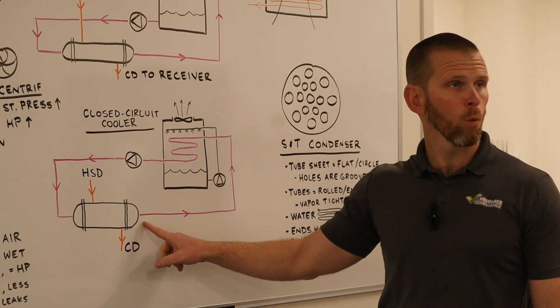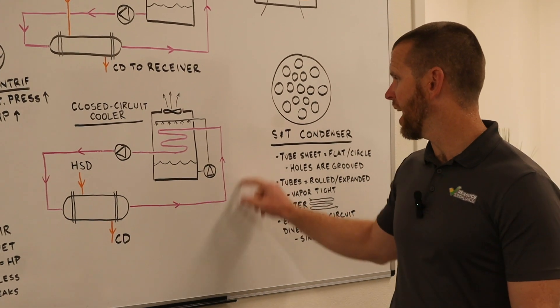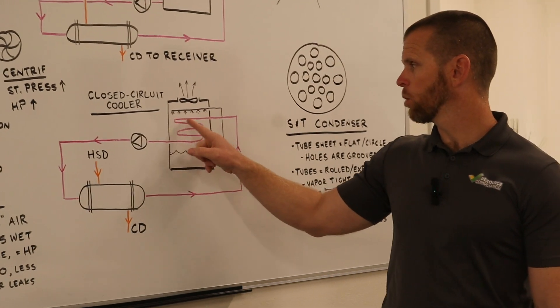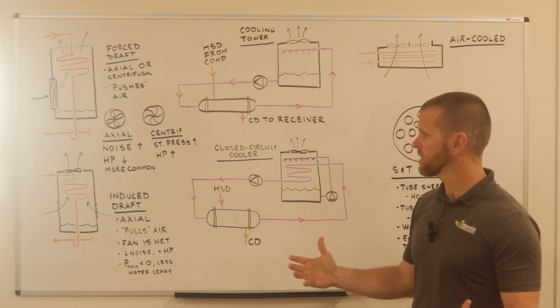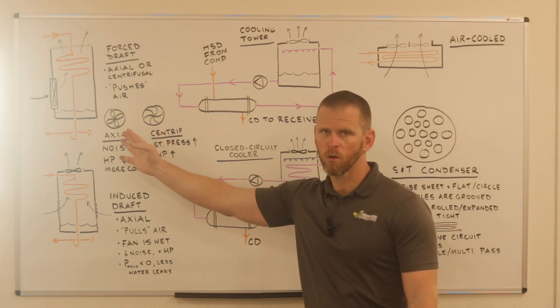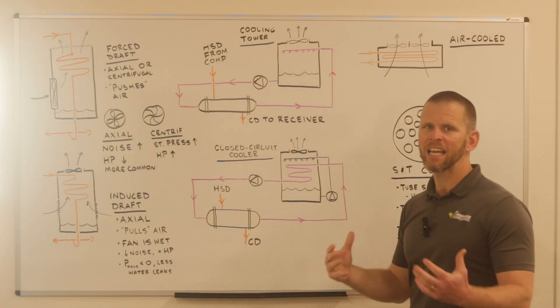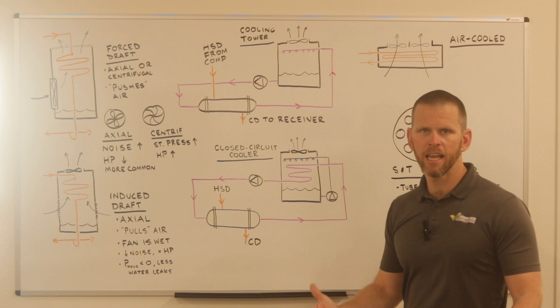A cooler temperature enters, a warmer temperature leaves, and so we bring it up to our closed-circuit cooler, and we circulate through this. This closed-circuit cooler operates very similar to the evaporative condenser we've already looked at, but we don't call it a condenser because nothing is being condensed.